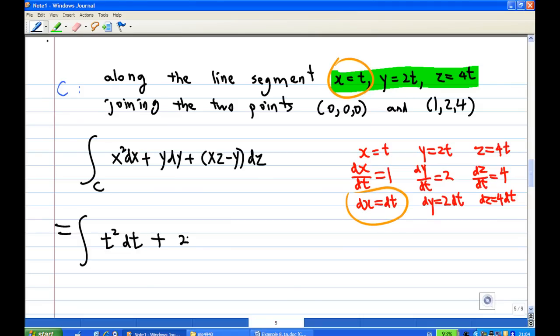Now, y is 2t. And what is dy? dy is 2 dt. So I have 2 dt now.